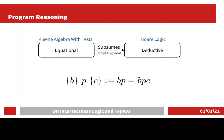As Kozen noted, the theory of Kleene algebra with tests subsumes the deductive reasoning of Hoare logic with the following encoding of a Hoare triple.